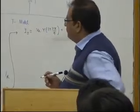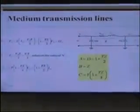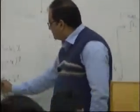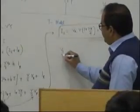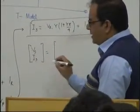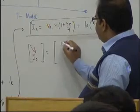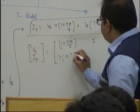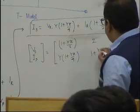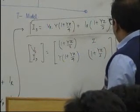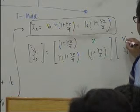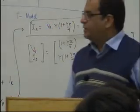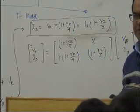So the values have come out. Now representing this: you have one equation for VS and one equation for IS. Your A is 1 + YZ/2, B is equal to Z, C is equal to Y(1 + YZ/4), and D is equal to 1 + YZ/2. You have VS, VR, and IR. This is your model for the medium transmission line for the Pi model.